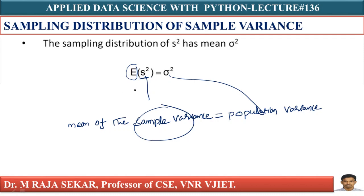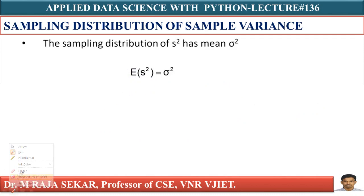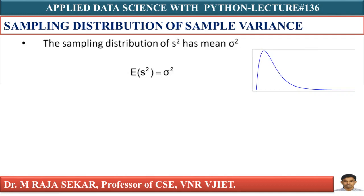When you take samples from a normal population and find the sample variance, and plot that, the distribution will follow a particular shape. That shape of distribution is known as the chi-square distribution. So if the population distribution is normal, the sampling distribution of sample variance follows a chi-square distribution.